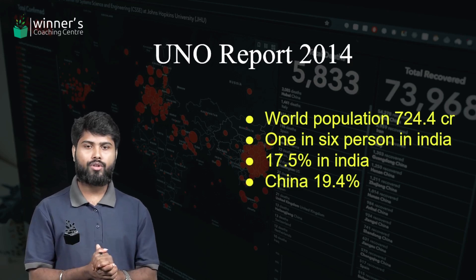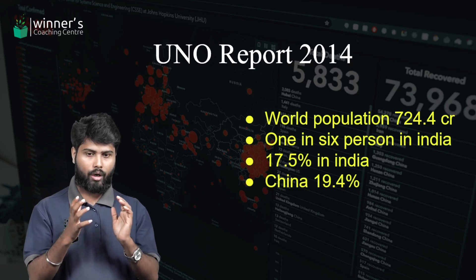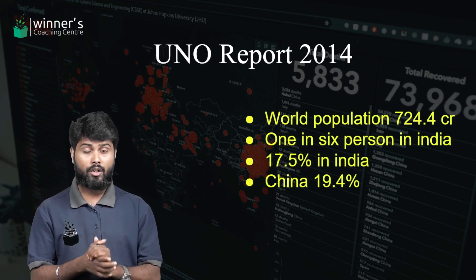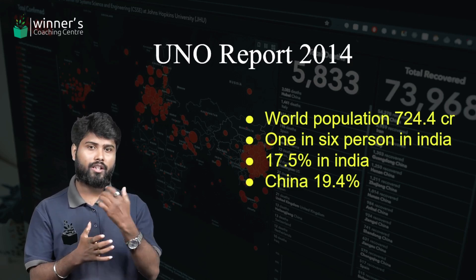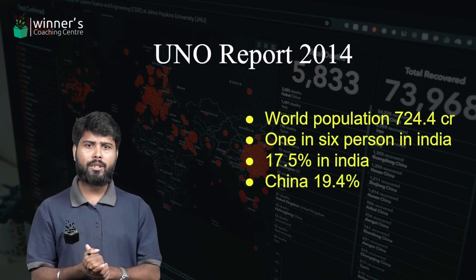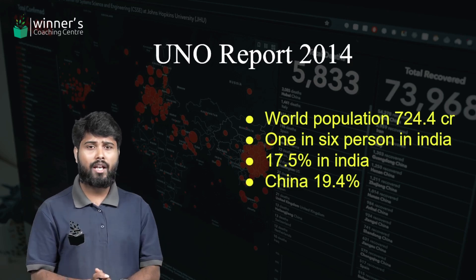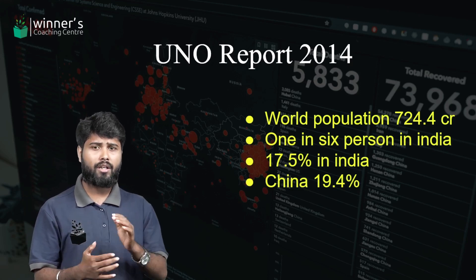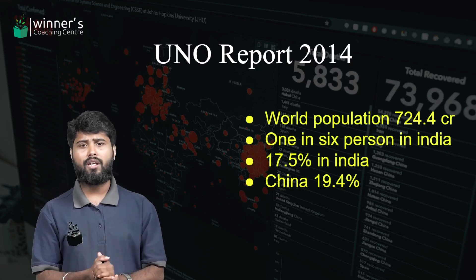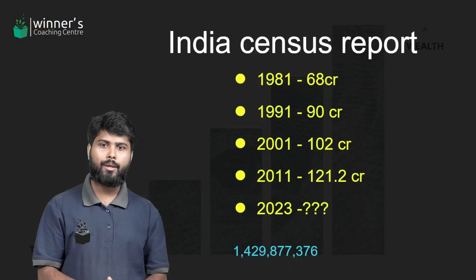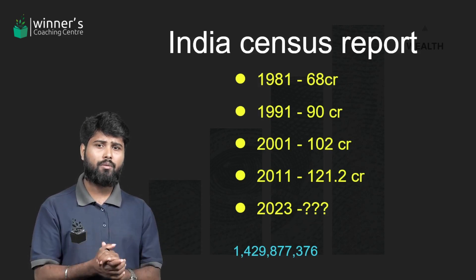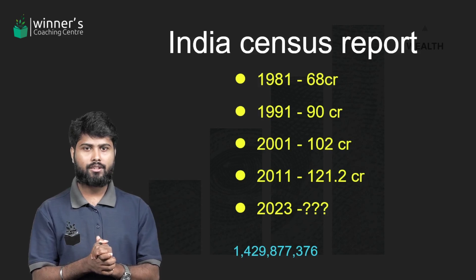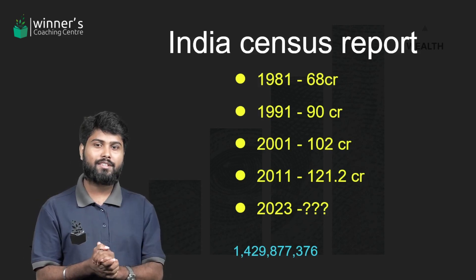According to the United Nations Organization report in 2014, India was the second most populous country. In 2014, China held the third position. As of 2019, India's population census is more than 120 crore, and by another count more than 142 crore.